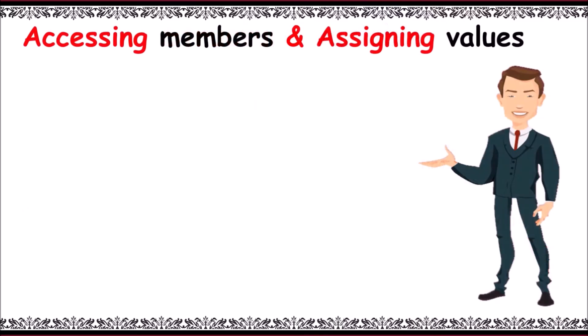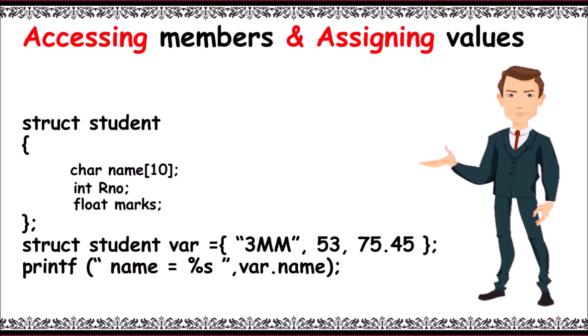Accessing members and assigning values: let's consider the previous structure. While declaring a variable, struct student var equals, we write values in sequence in braces: string 3MM, integer 53, float 75.45, and close the braces.